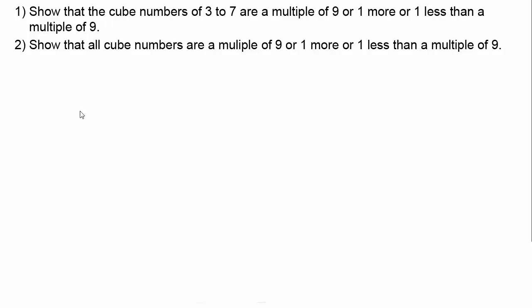I've got a couple of examples here that you might want to try. In the first one we've got: show that the cube numbers of three to seven are a multiple of nine, or one more or one less than a multiple of nine. And in the second example: show that all cube numbers are a multiple of nine, or one more or one less than a multiple of nine. If you'd like to have a go, pause the video now. When you come back you might want to fast forward to check your solution against mine, otherwise I'm going to take you slowly through the worked solution.